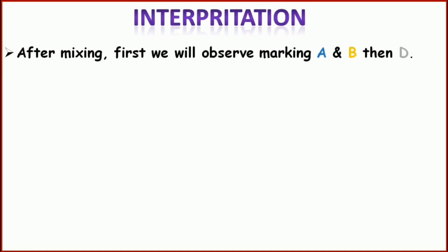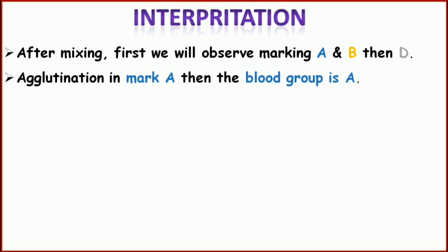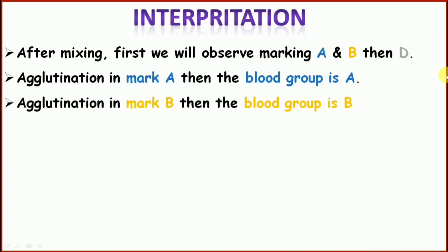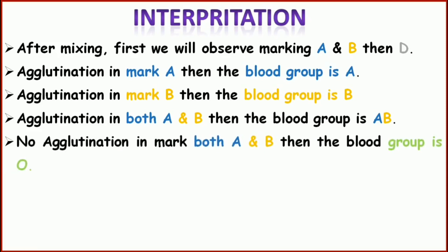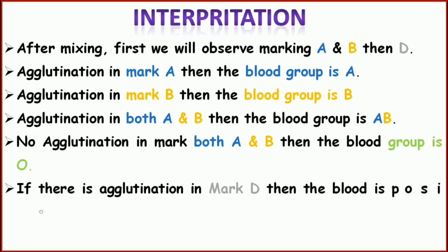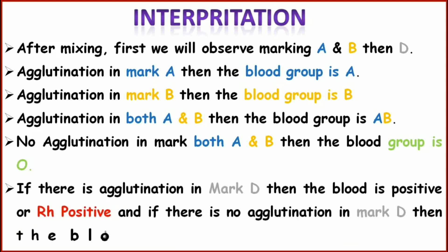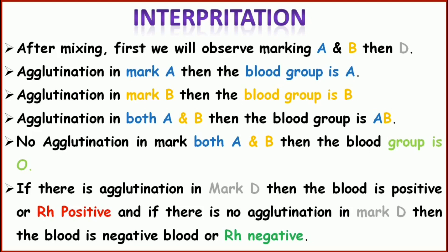For interpretation, first observe markings A and B, then observe D. If there is agglutination in mark A, blood group is A. If there is agglutination in mark B, blood group is B. If there is agglutination in both A and B, blood group is AB. If there is no agglutination in both A and B, blood group is O. Then for D: if there is agglutination in mark D, blood group is RH positive; if there is no agglutination in mark D, blood group is RH negative.